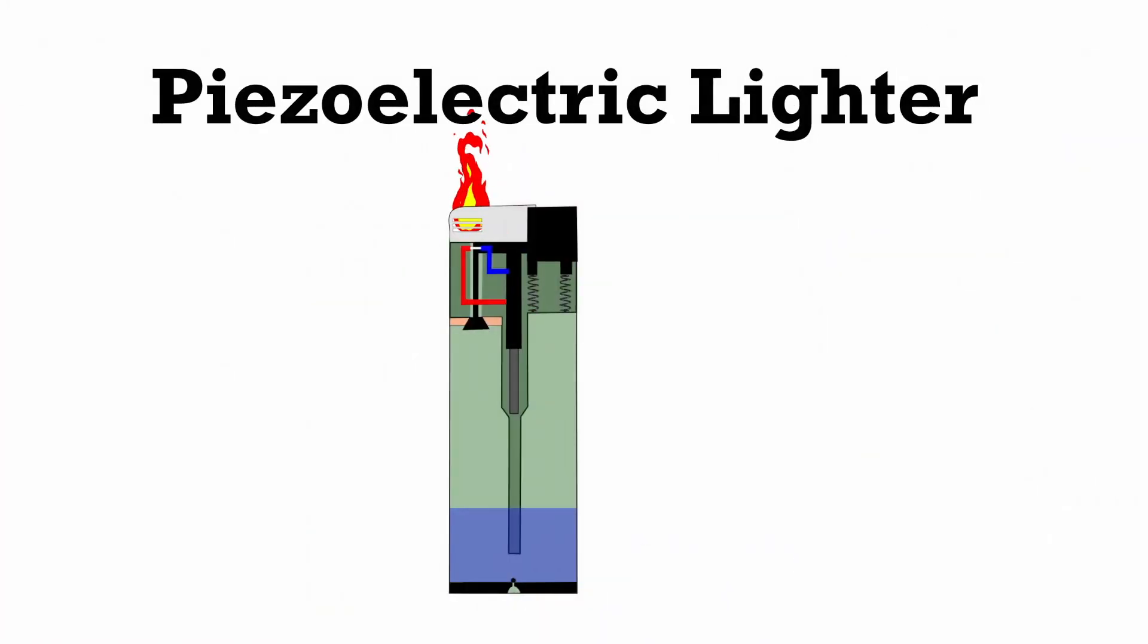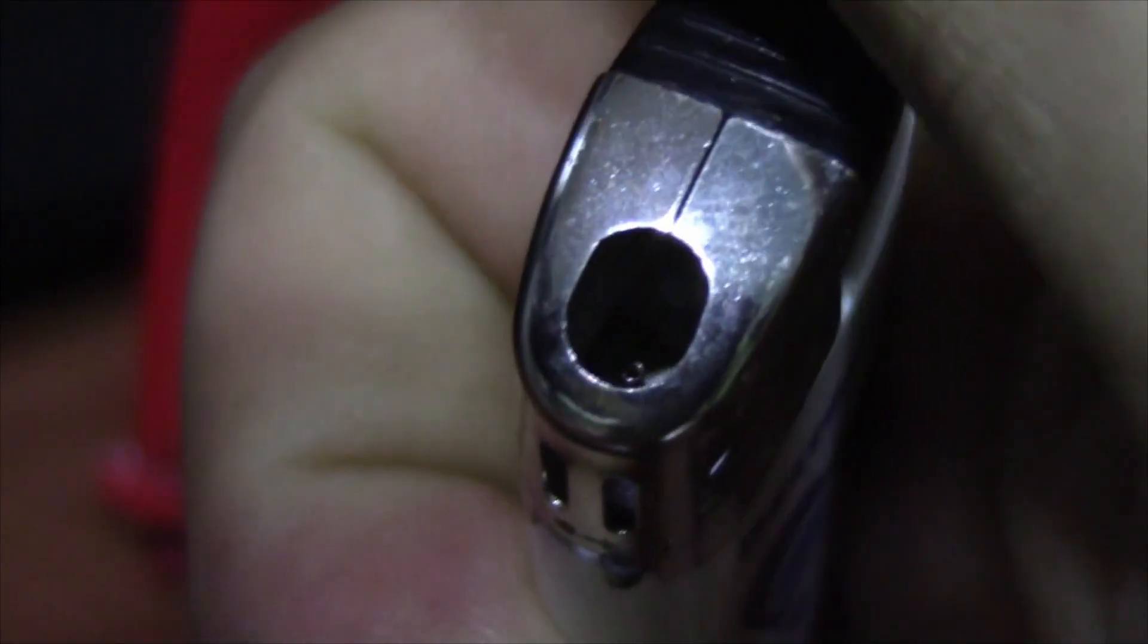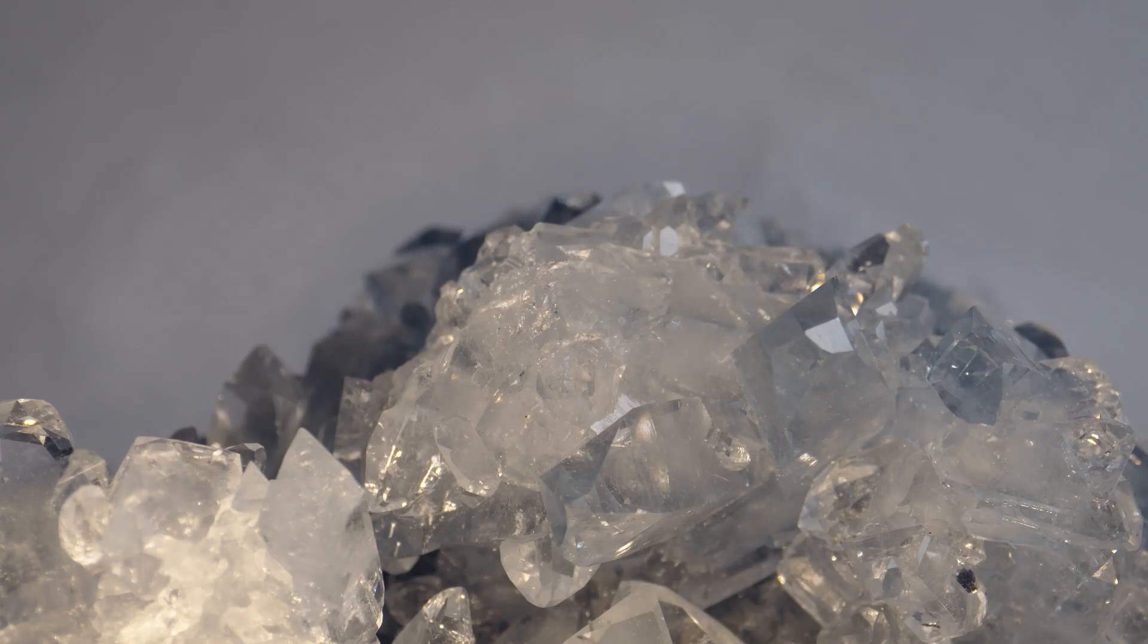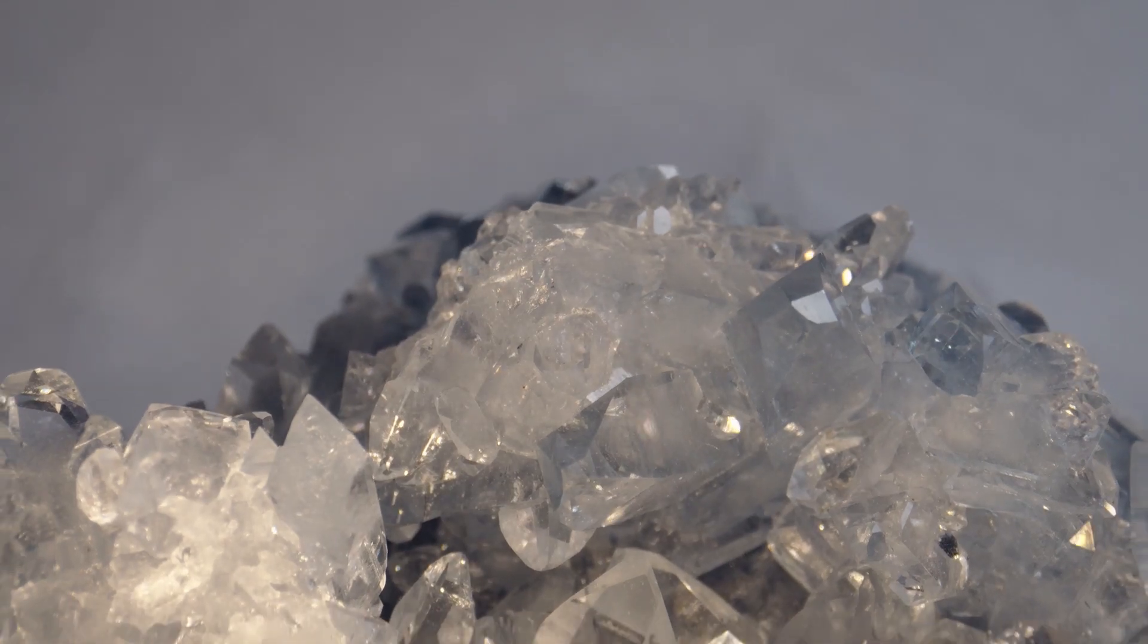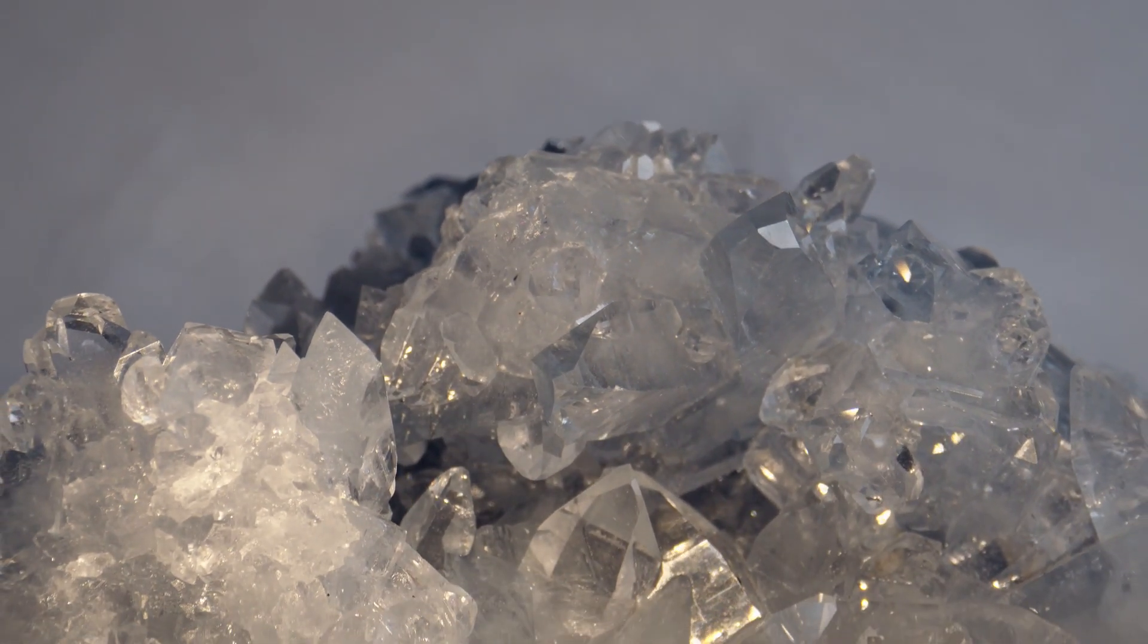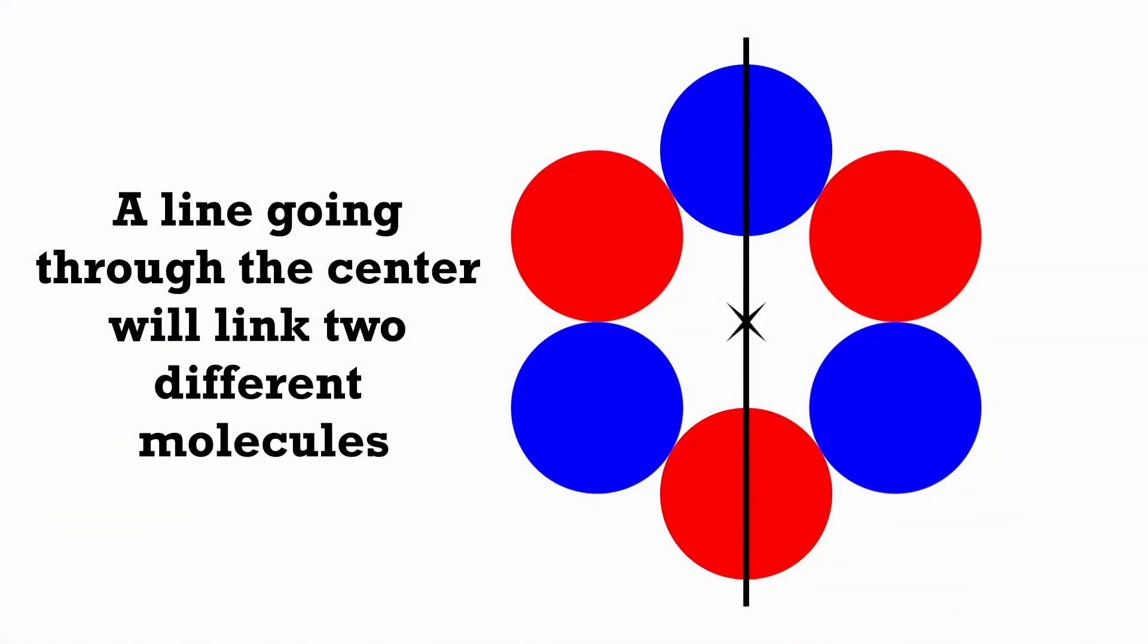Next up is the piezoelectric lighter. The only real difference with this type of lighter is the cause of the initial spark. They utilize a piezoelectric crystal. These crystals produce a high voltage when they have a force applied to them. The way they do this is due to the orientation of the crystals, which don't have a center of symmetry. Let's look at this quartz crystal to see how it works.